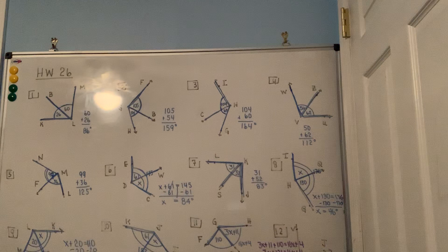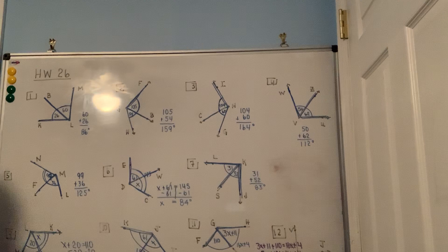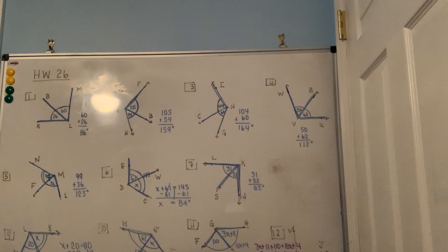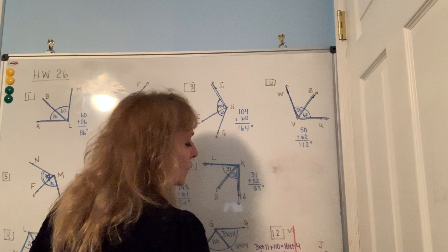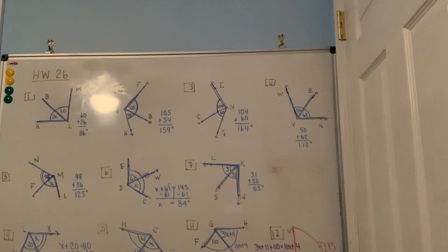I need to erase the previous work to make room for number twelve. Using a red marker so it's easy to see: angle VUT is 175 degrees — that's the full angle. The problem continues but I'll have to read it since it's difficult to see on screen.